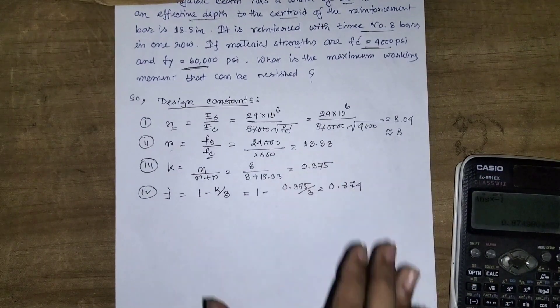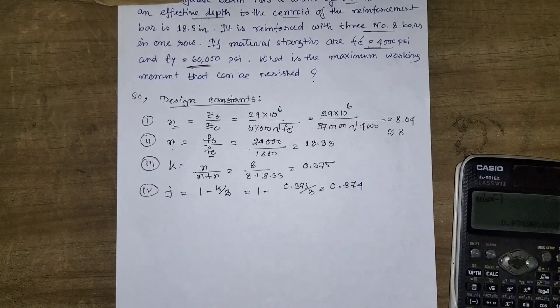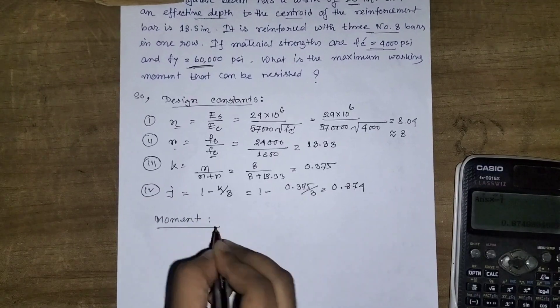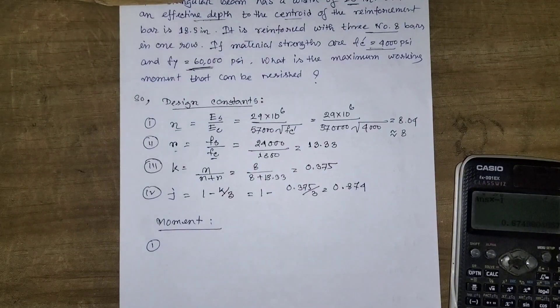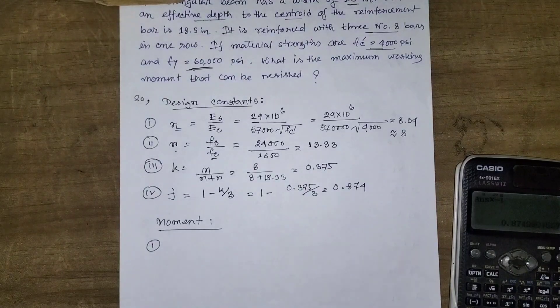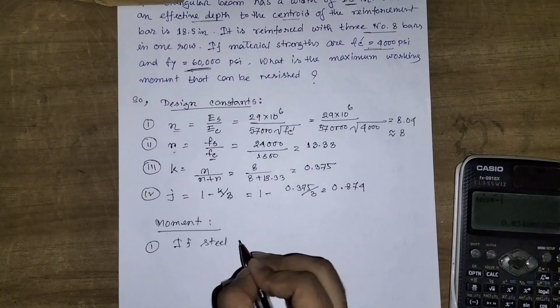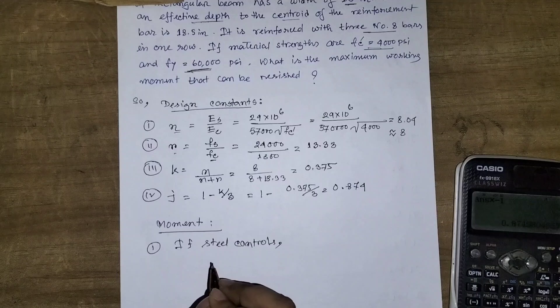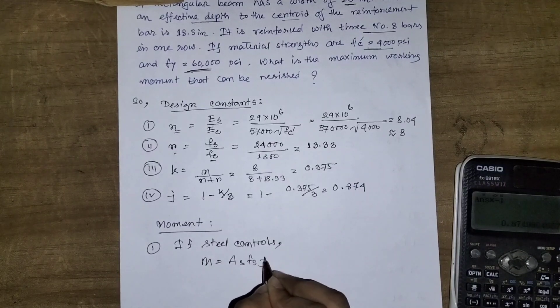j equals 0.874. Now we have all our design constants. Let me calculate the moment. First, I'll find the moment based on steel capacity.